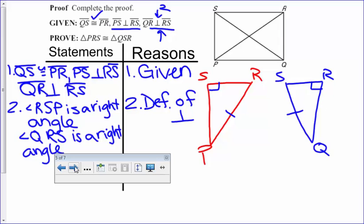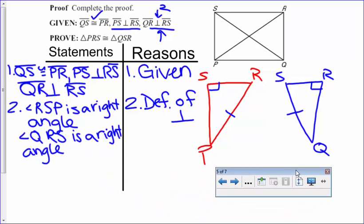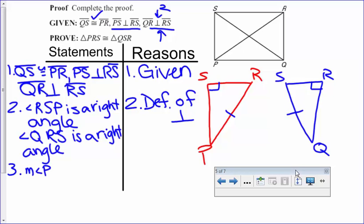The reason why we're allowed to mark that a right angle is because of the definition of perpendicular. And I'm just going to abbreviate here to save some time. Alright, so now that we say that they're right angles because of the definition of perpendicular, the second step that always has to follow is now that we know that they're right angles, then we know